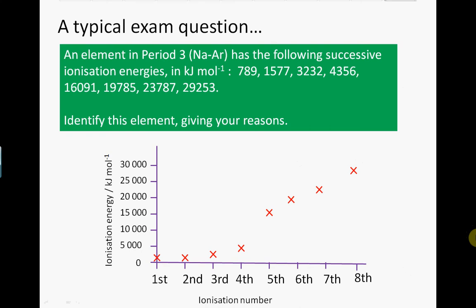So we've identified the element as silicon. That will get us a single mark. We will get the other marks by explaining how we worked it out. We can do that by saying there is a large jump in the ionization energy as we go from the fourth to the fifth electron removed. This jump corresponds to moving from the outer shell to an inner shell. Because the element is in period three, this means a move from the n equals three outer shell to the inner n equals two shell. This means the element has four electrons in the outer shell and so must be in group four. The group four element in the period three is therefore silicon.